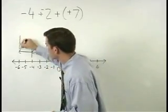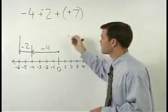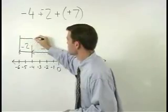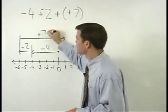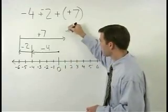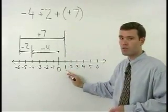From that point positive 7 moves us 7 units back to the right. So we end up at positive 1.